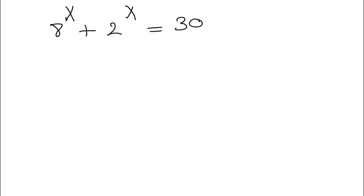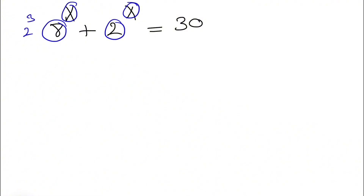Welcome back. We're going to be solving 8 to the x plus 2 to the x equals 30, and we need to figure out the value of x. We see that we have the same exponent in both terms, and 8 is 2 cubed, so we're going to plug that in.